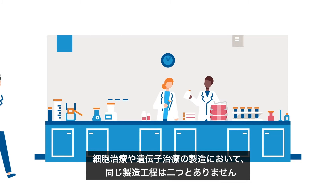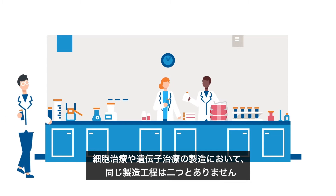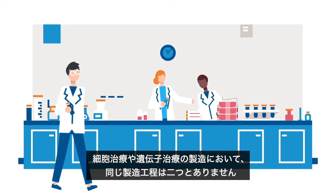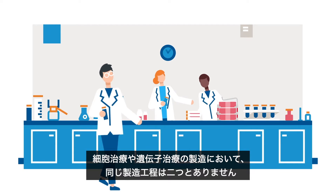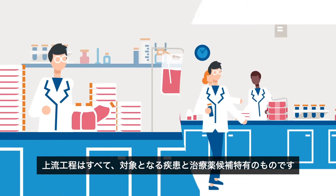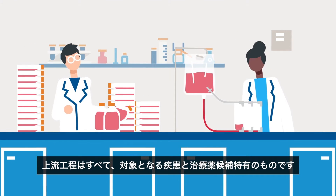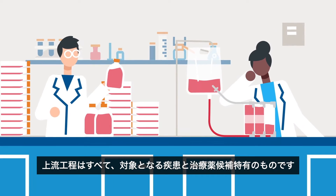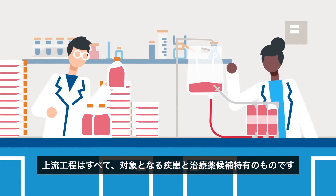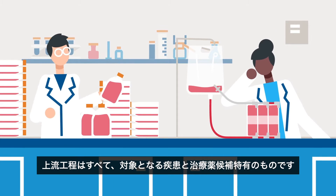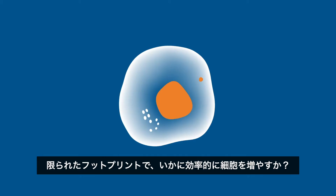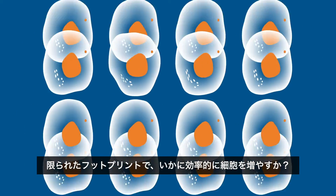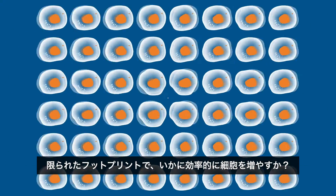In cell and gene therapy manufacturing, no two production processes are alike. Every upstream process is specific to the condition and potential therapeutic product being targeted. How can you effectively scale your cells in a limited footprint?